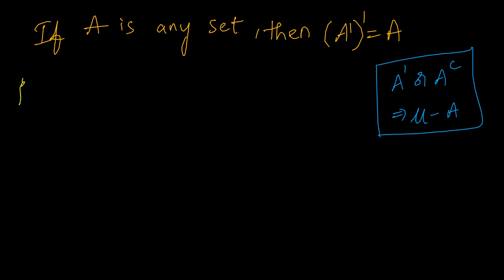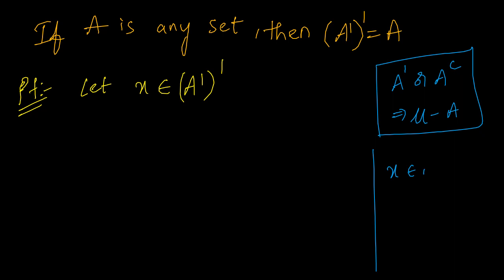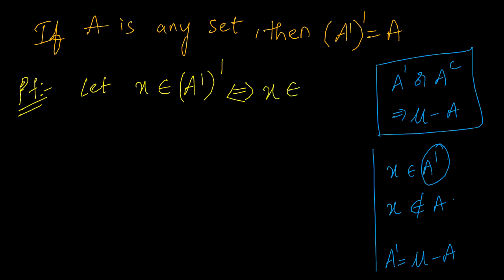Now let us see how to prove this. Let us consider one element X belongs to A complement, the whole complement. What is the meaning of A complement whole complement? If X belongs to A complement, what is the meaning here? If it is in the complement, I can conclude that it does not belong to the set A. Because complement says A complement formula is mu minus A — we need to remove all elements of A from the universal set. If X belongs to A complement whole complement, easily I can say X belongs to A, does not belong to A complement.